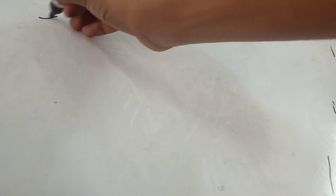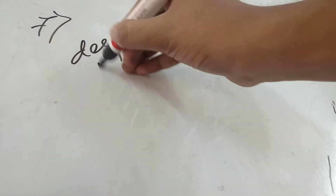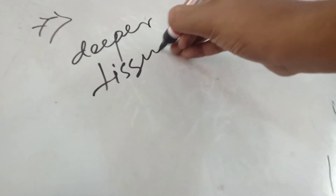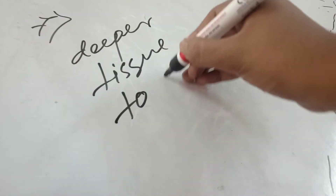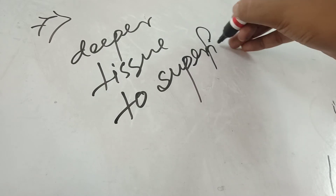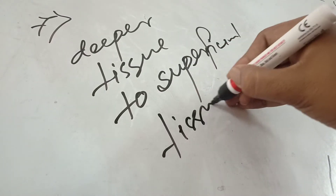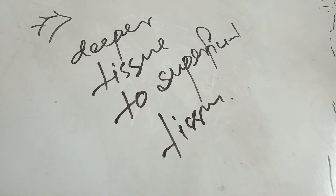Seventh principle: the needle will always go from deeper tissue to superficial tissue. Always deeper tissue to superficial tissue. This applies when different layers of tissue are being sutured.